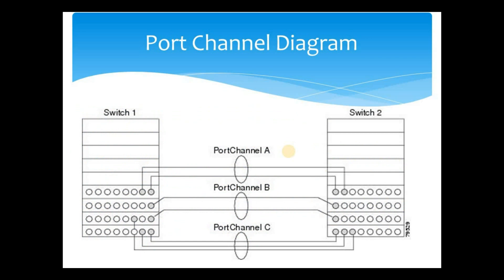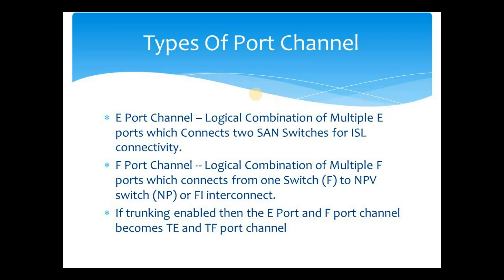In this simple diagram we have Switch 1 and Switch 2 with three port channels: A, B, and C. Port channel A is a combination of two ports within the same module. Port channel B has ports selected from two different modules. Port channel C has three ports — two from the same module and one from a different module — while on Switch 2 all three ports are from the same module.